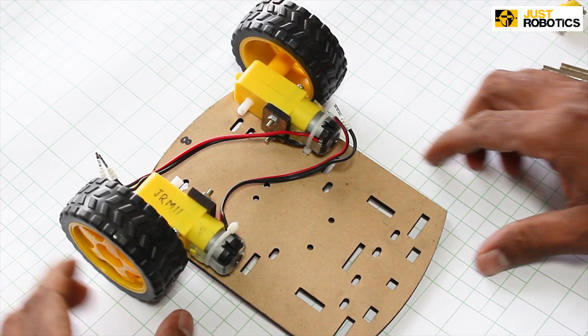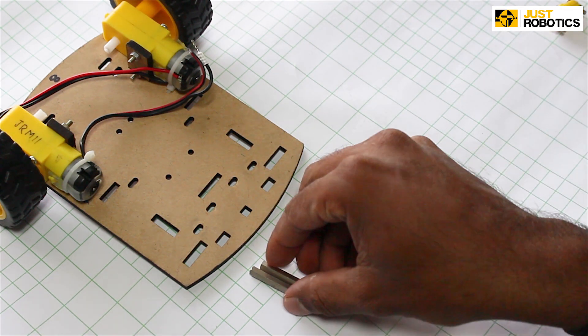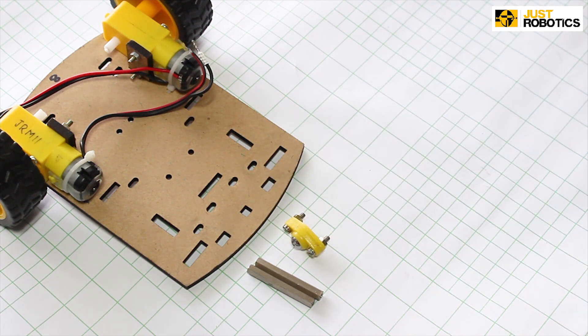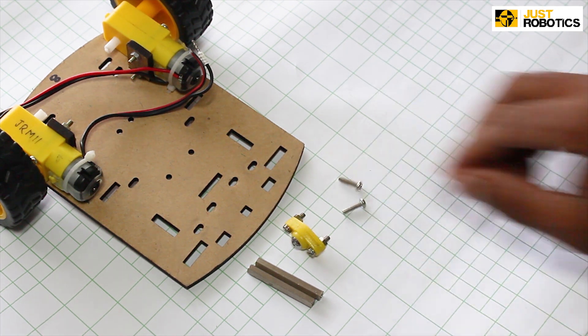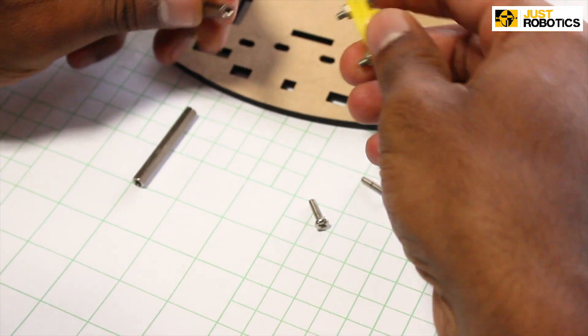Now let's attach our caster wheel onto our chassis. Take two spacers and two screws. Now take a spacer and attach it to your caster wheel.